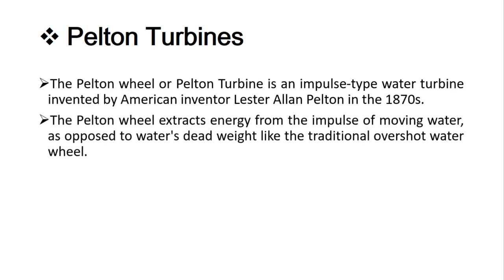The Pelton wheel extracts energy from the impulse of moving water. Basically, a dam is constructed so that the complete kinetic energy is converted into potential energy in terms of the head of water. That potential energy is then converted into impulse. Impulse is when a huge amount of force is directed for a fractional period of time, causing the runner to rotate, generating runner power, then shaft power, and finally electrical power.